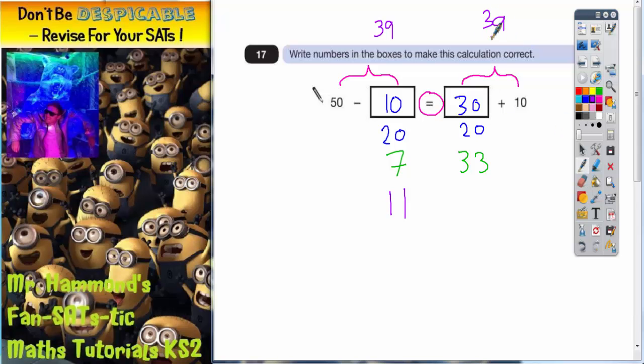So if something plus 10 has got to make 39, well, it's going to be 29. 29 plus 10 makes 39.